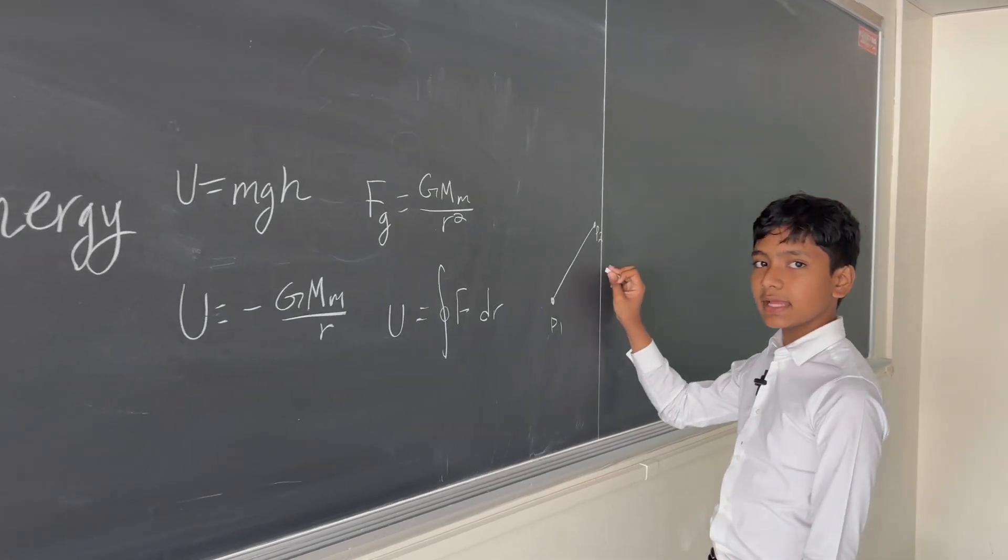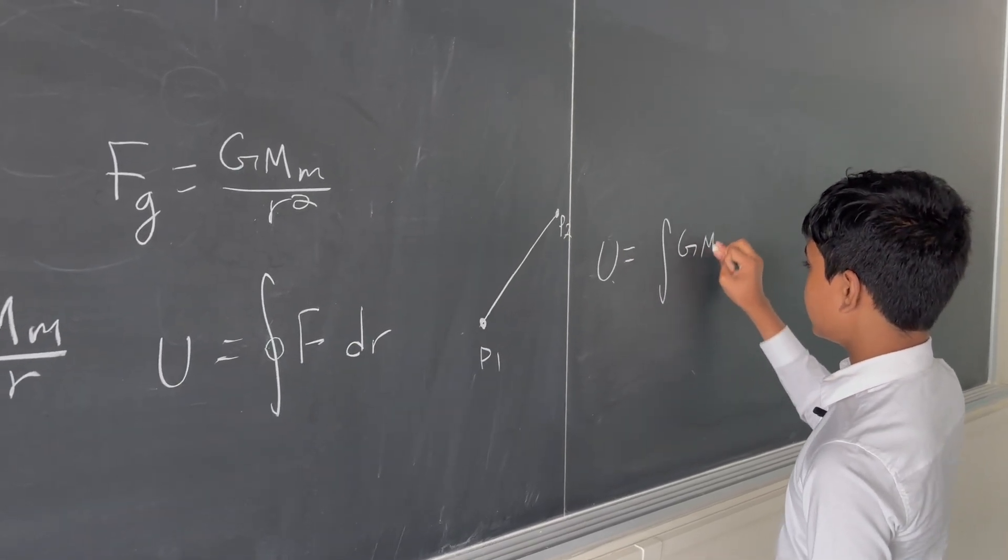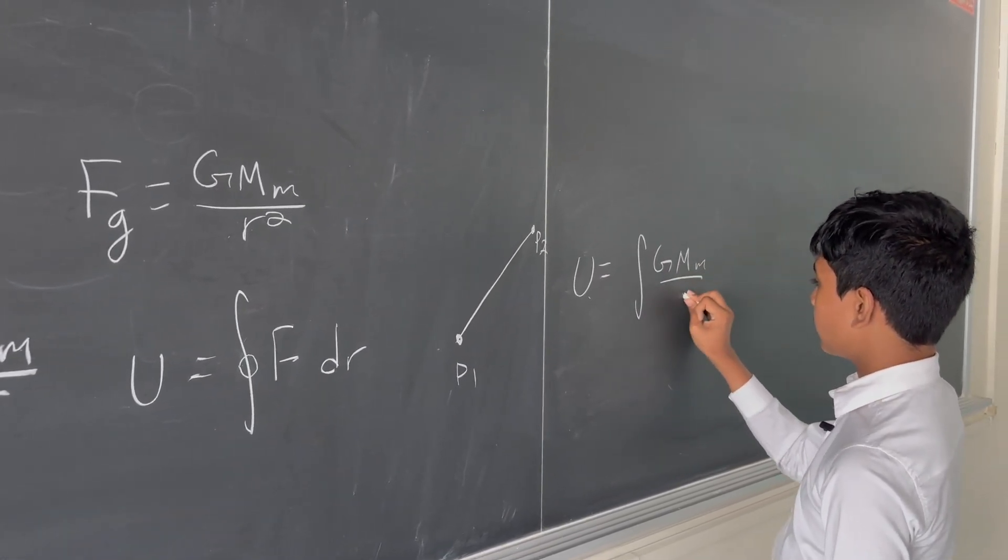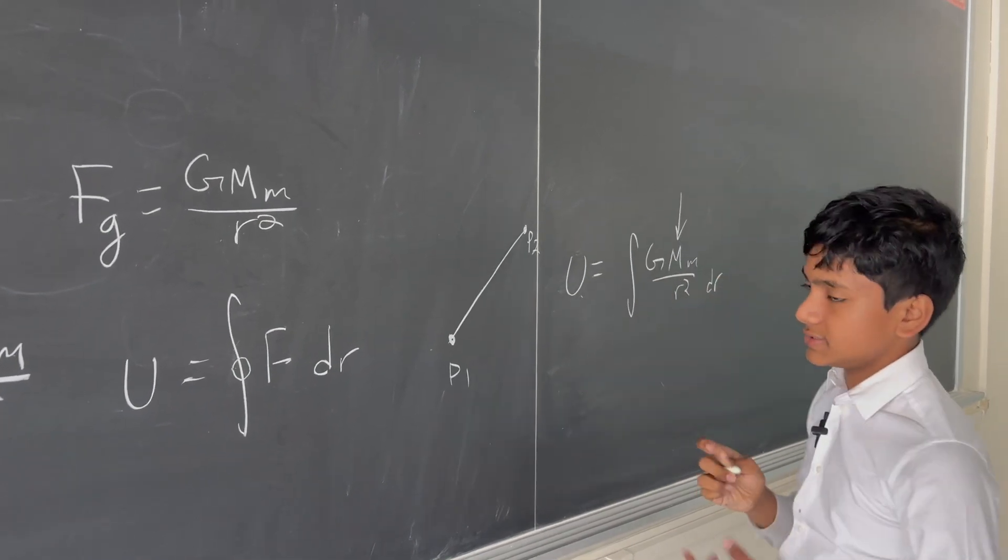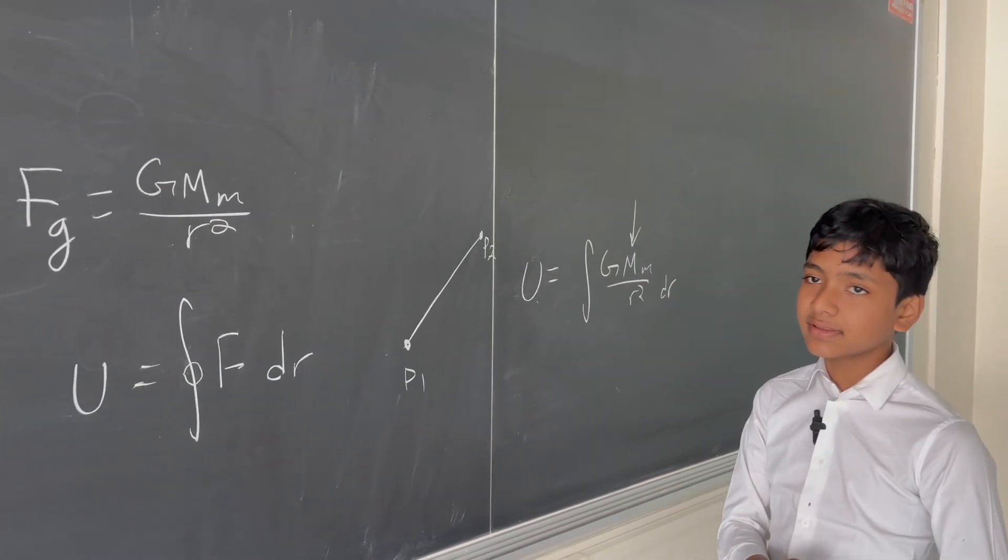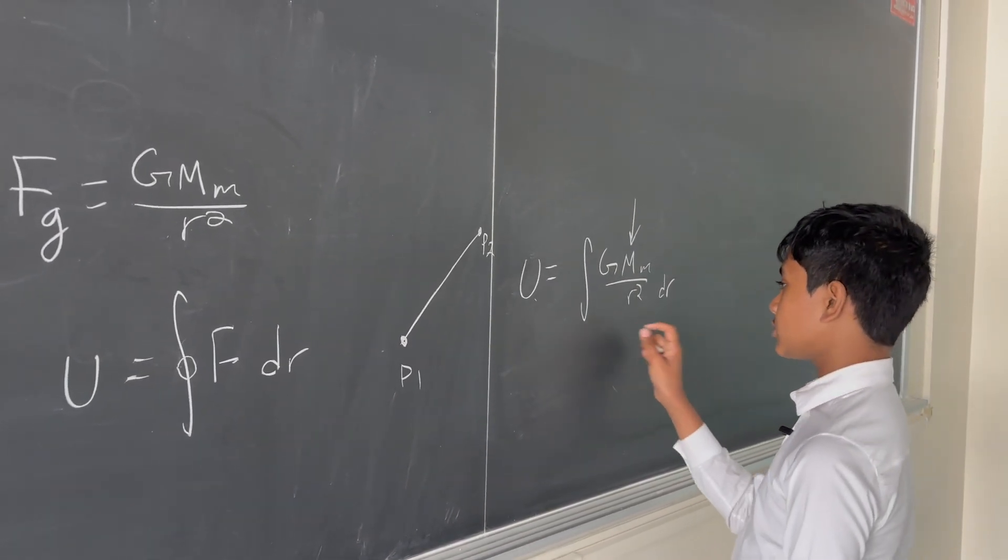We can just set this, because it's a very basic integration problem, GMm over r squared dr. It's the gravitational constant, it's literally in the name. We can treat the two masses as constant, since they basically never change.